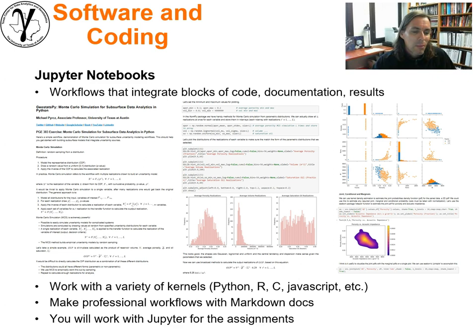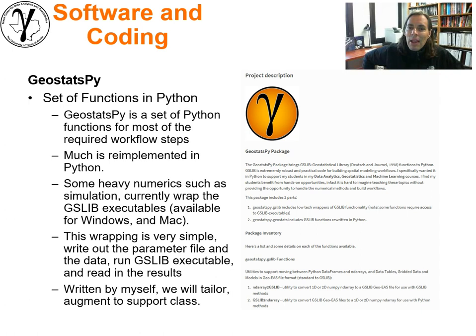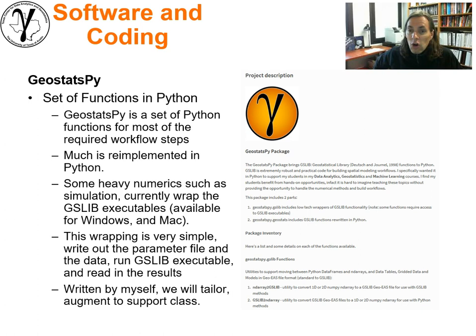GeostatsPy — last term I was running a subsurface modeling course and couldn't find good open source reliable software to do exactly what I wanted. So I went back to the fundamental geostatistical library, GeoSLib, and converted it into Python — most of it. It's in two-dimensional for now with more to do. I also added in practical modeling work steps, and that's available in GeostatsPy. It's open source and I hope you appreciate it — it was a bunch of my weekends last term.